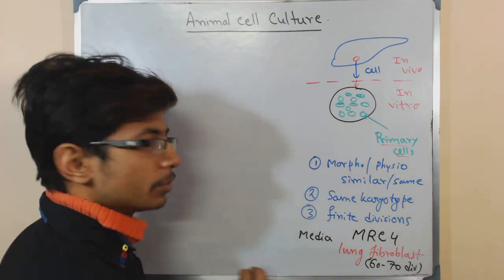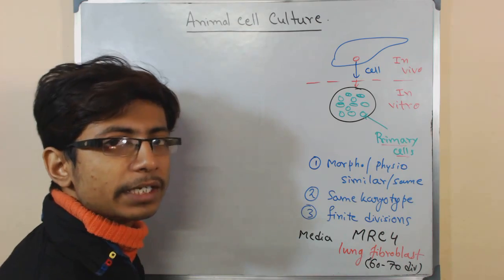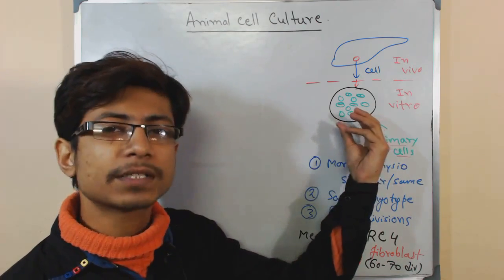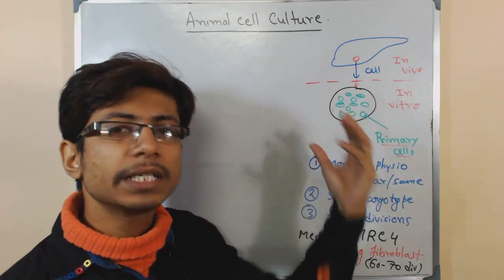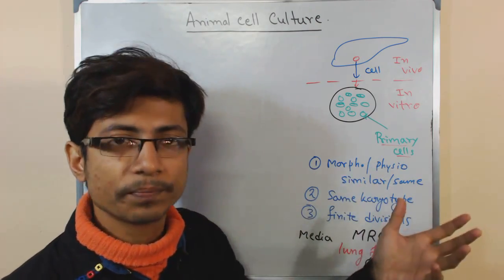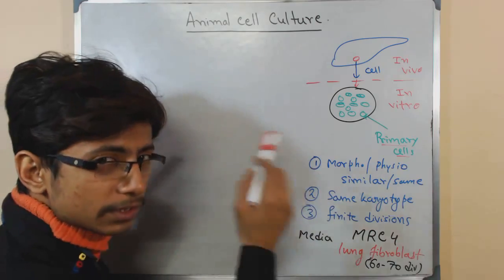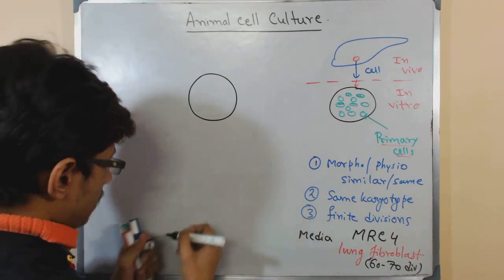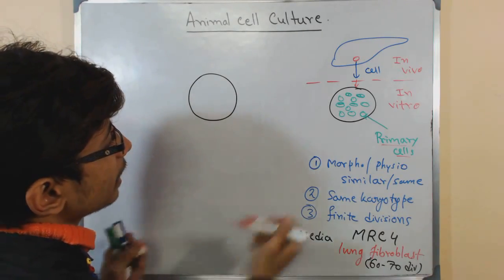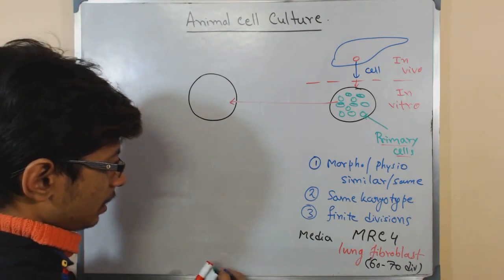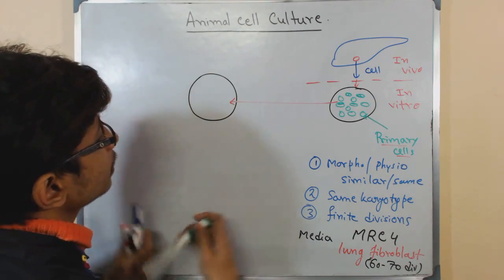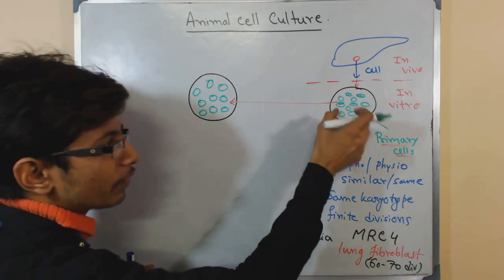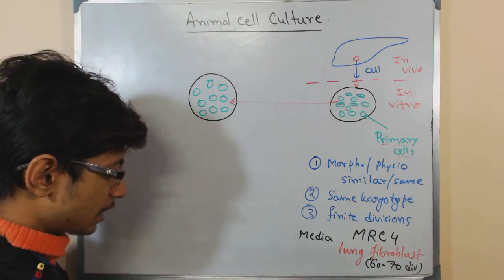Once we reach the situation where primary cells start to die after a certain number of divisions, what we need to do is make a copy of the cells. We take some cells from this primary cell culture and place them into another medium so that the cells continue to grow. That first transfer of cells — taking the cell from one culture to another — is called the subculturing process.